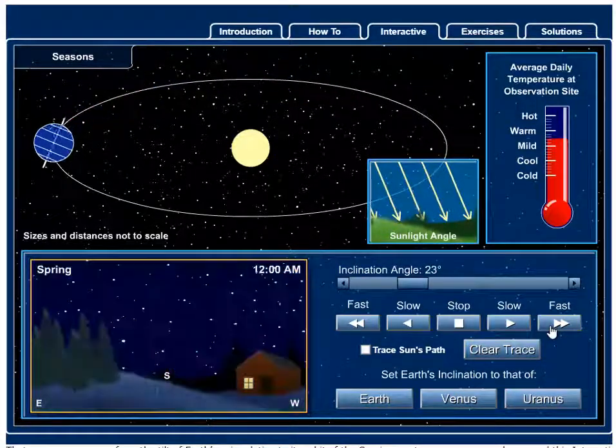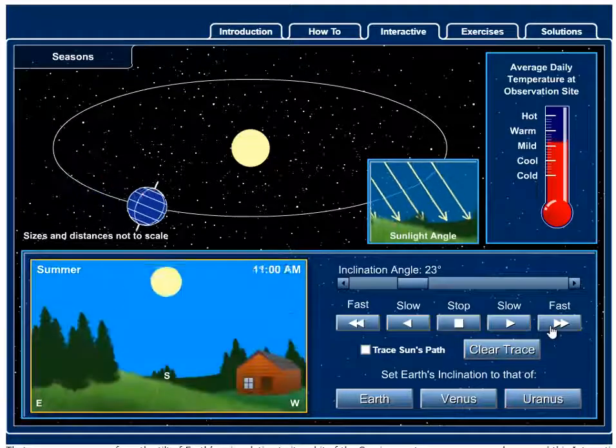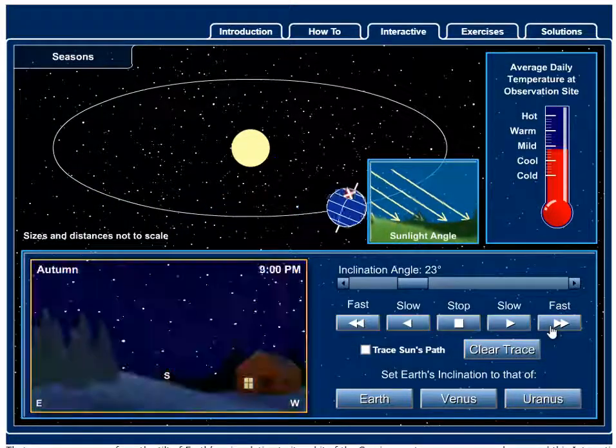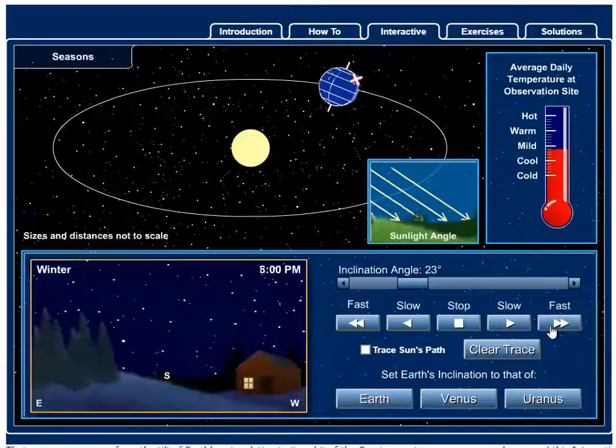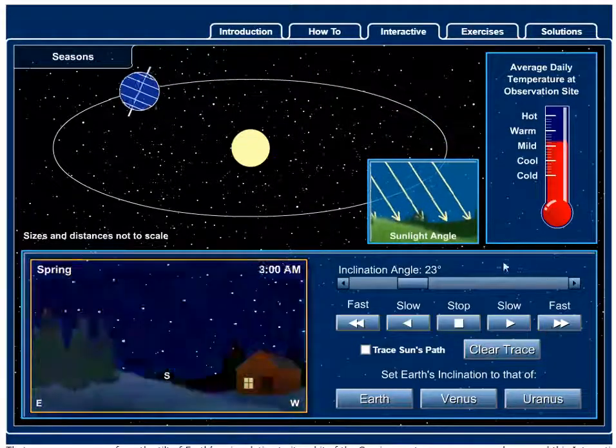So let's speed it up one more time so you can see all these things. Warmer, more direct light. And then colder, more indirect light. Again, we're not any closer or farther from the Sun. It's just the directness of light that makes a difference.